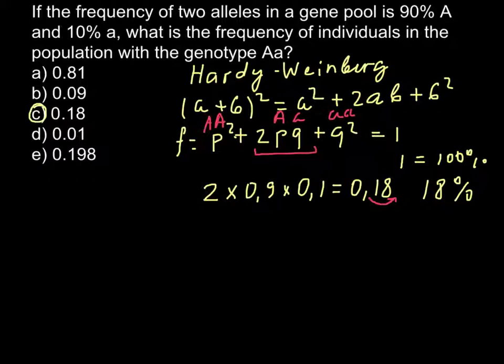In some questions with multiple choice answers, you may have here for example 81%, 9%, 18%, 1%, and 19.8%. You just need to know how to transfer these numbers that you have in the formula, because everything here would be less than 1. If you add all these numbers you should get 1, and this is how you check your answer.